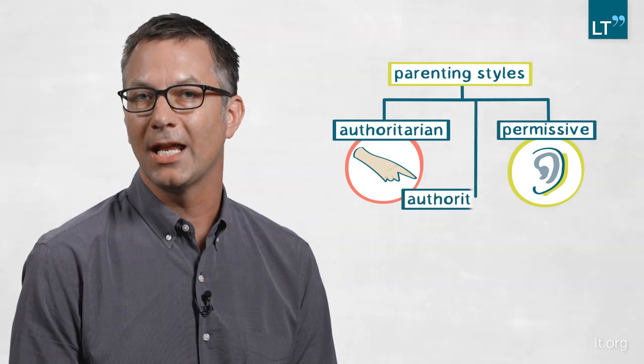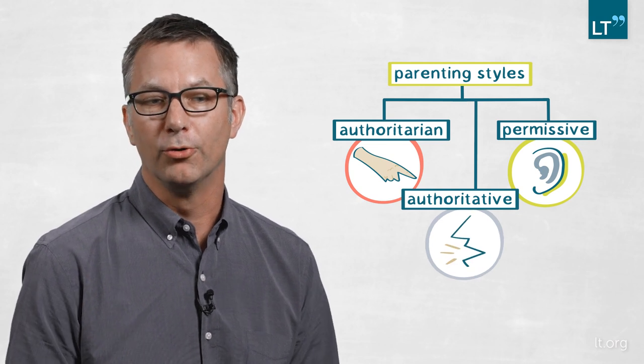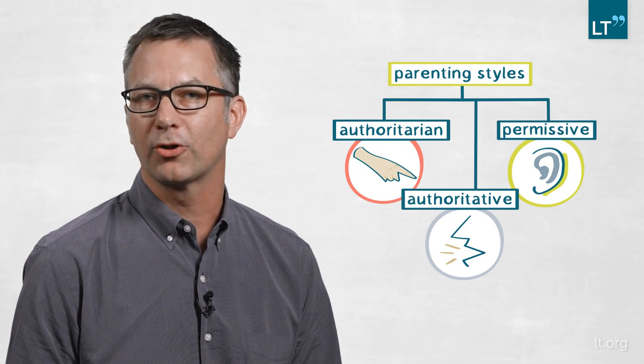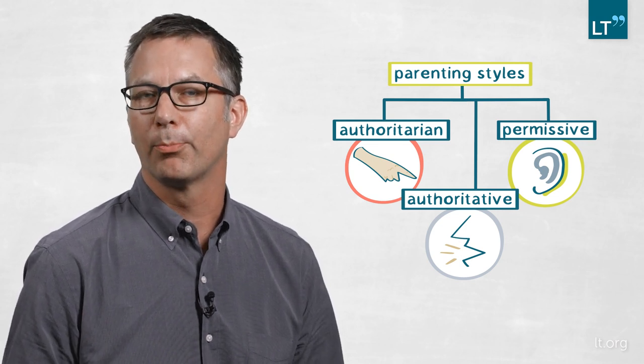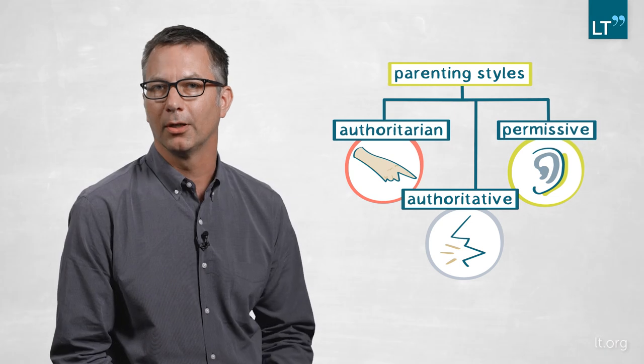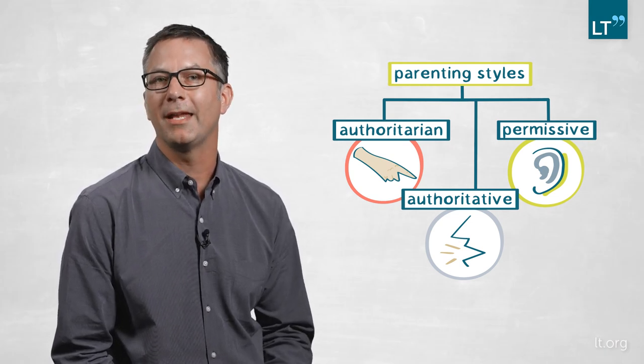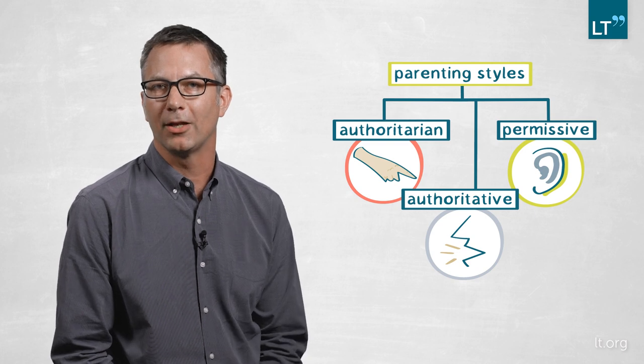Somewhere in the middle is authoritative parenting, where parents do want to provide guidance to their children but do it in a different way by trying to persuade their children that their own point of view is the right one. So it's a parenting style more based on arguing with children and explaining decisions as opposed to just demanding obedience outright.